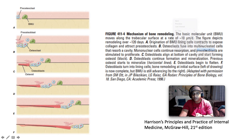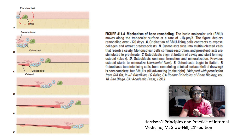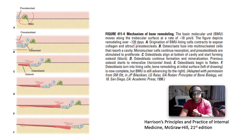Let's look at some pathology. Looking at the mechanism of bone remodeling from Harrison's: the basic multicellular unit (BMU) moves along the trabecular surface of bone at 10 microns per day, depicting remodeling over about 120 days. In picture A, origination of the BMU — lining cells contract to expose collagen and attract pre-osteoclasts. In B, osteoclasts fuse into multinucleated cells that resorb a cavity. The osteoclast's claim to fame is bone resorption; the osteoblast lays down bone matrix.